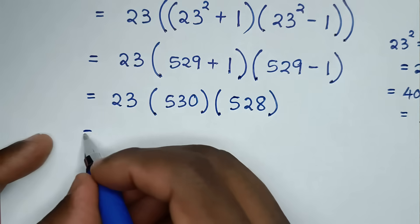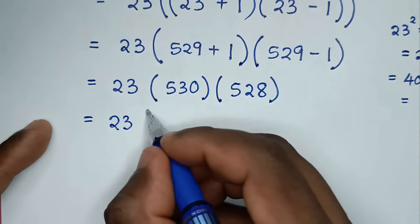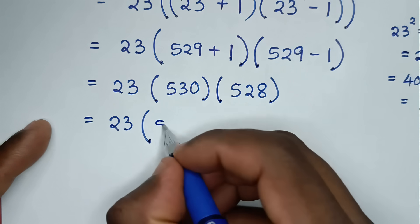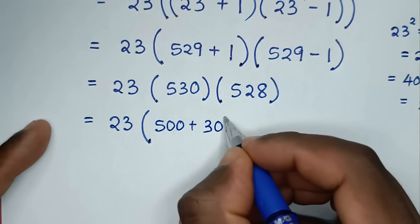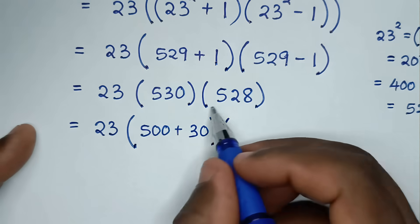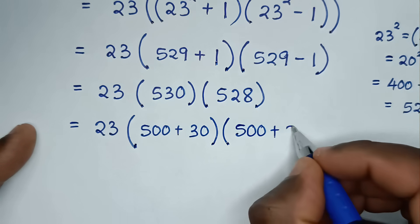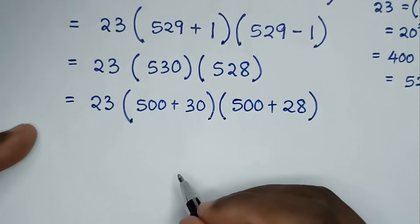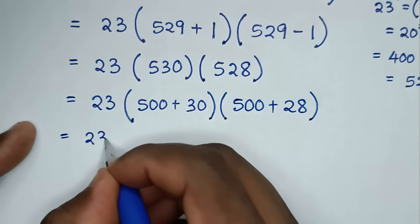So it will be equal to 530 bracket. 530 is written as 500 plus 30, bracket, then bracket 528 is written as 500 plus 28, bracket bracket.